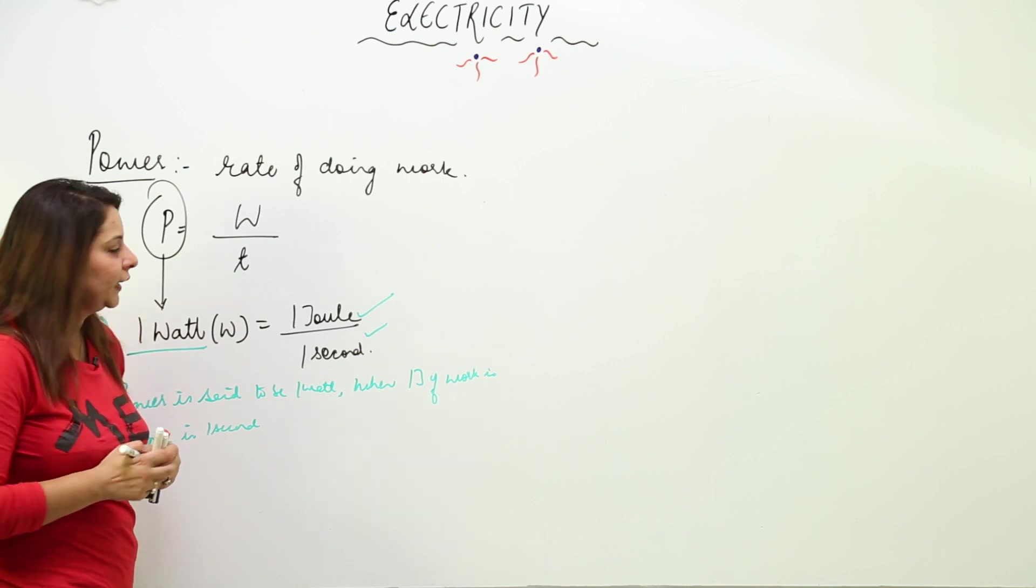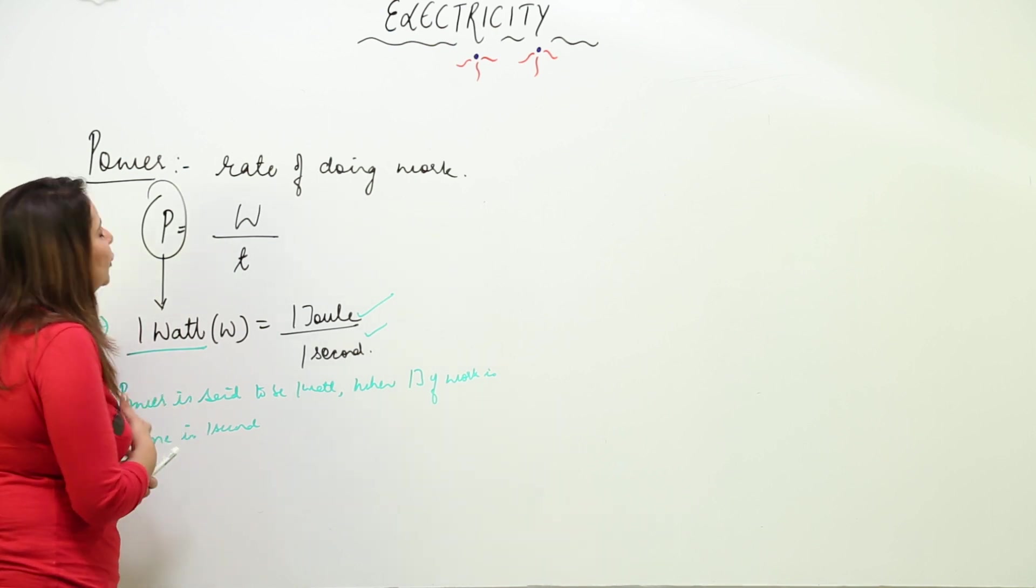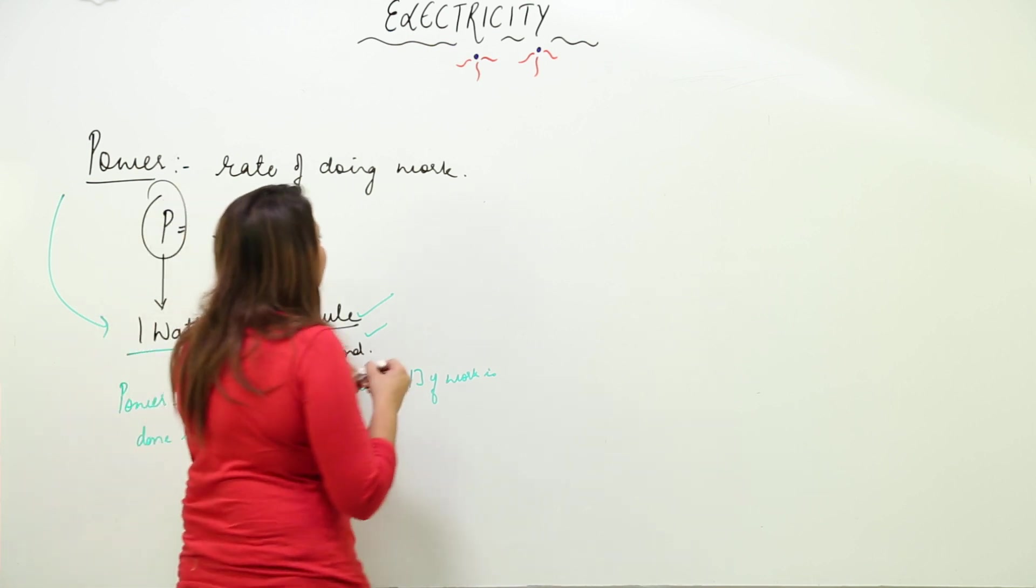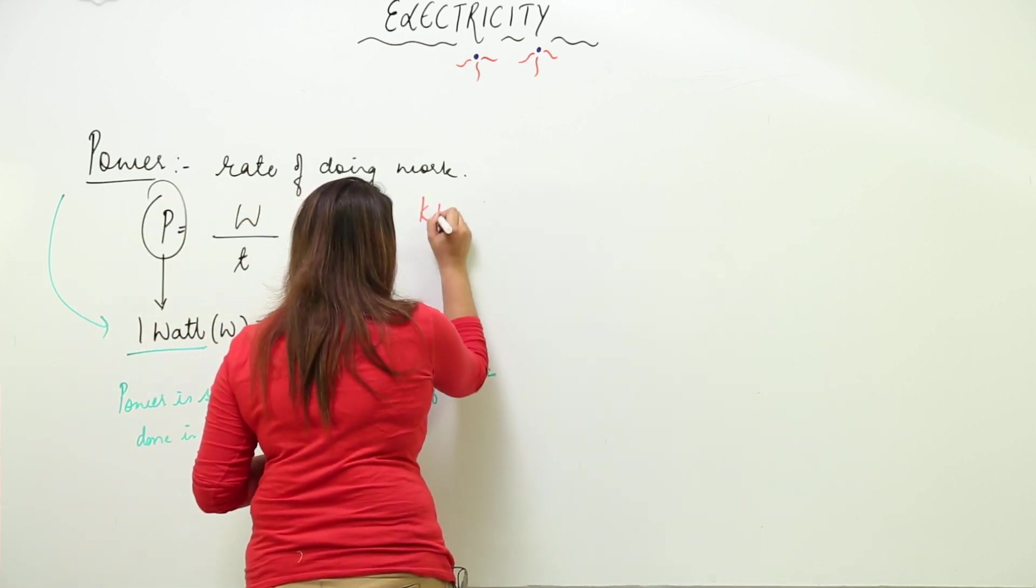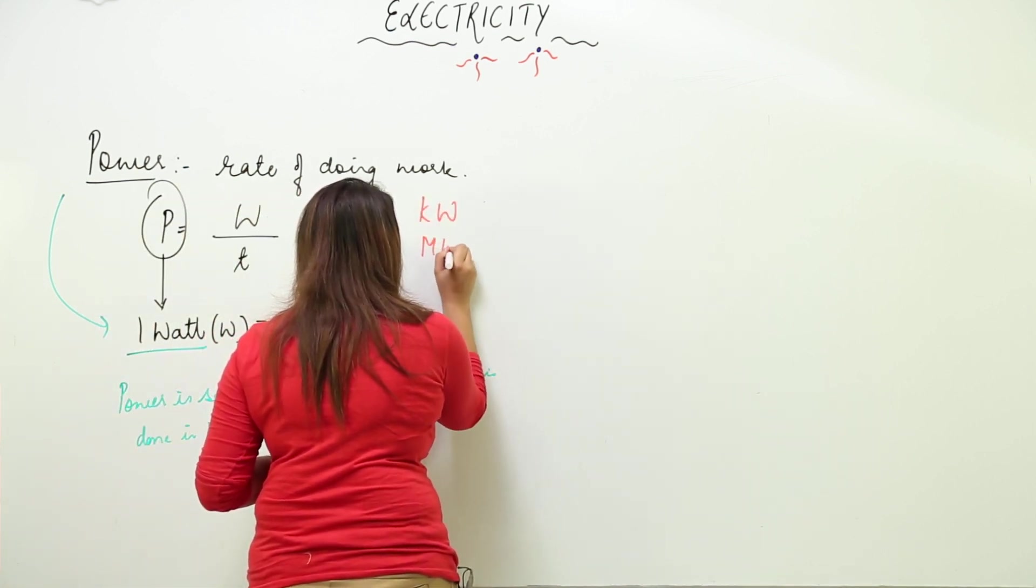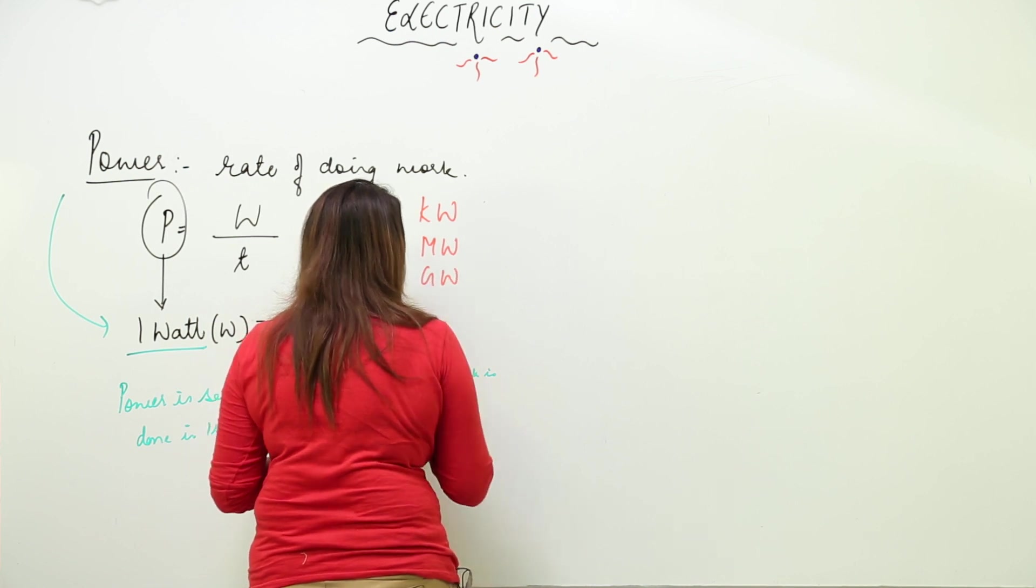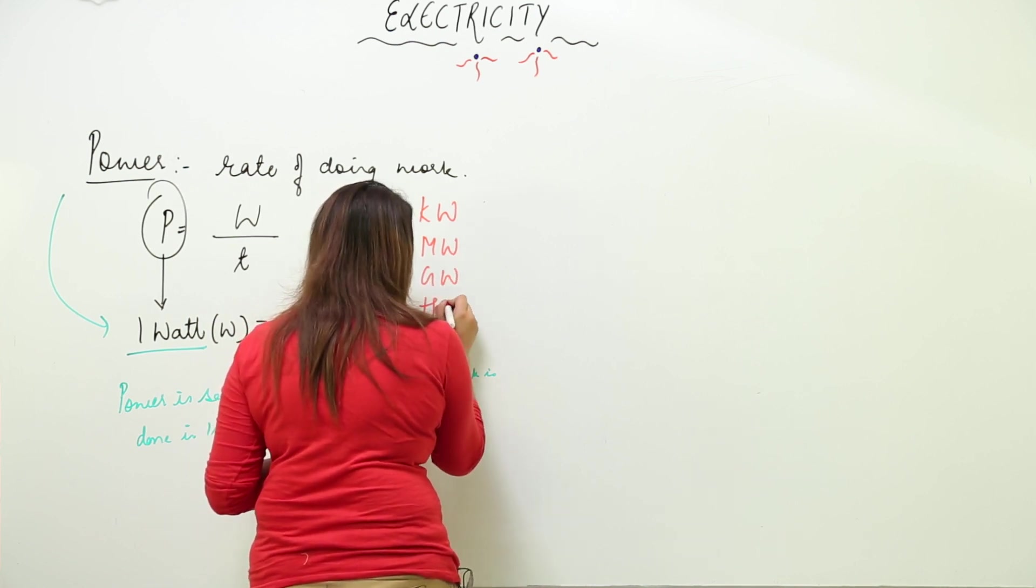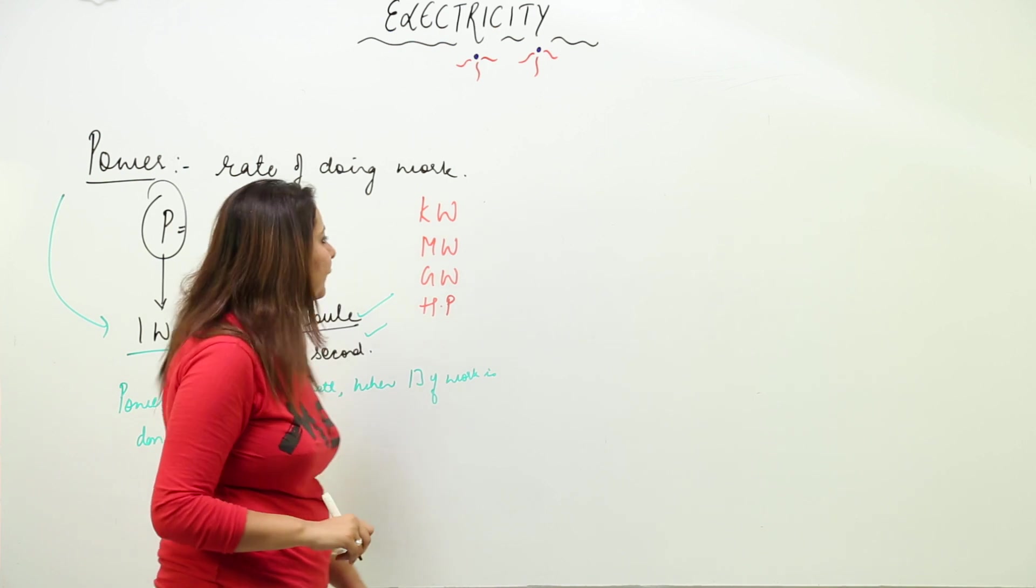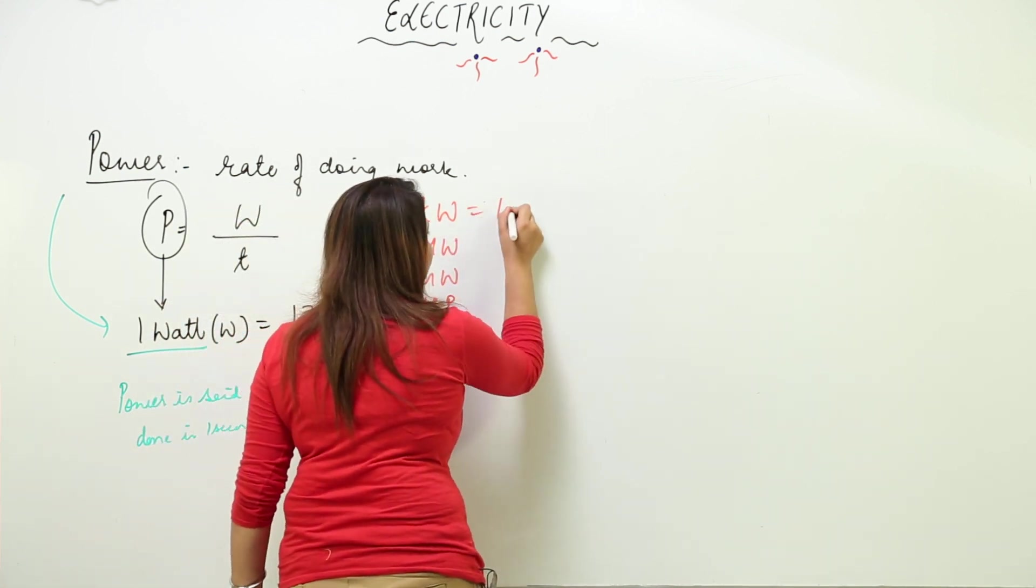The SI unit of power is watt, but we have many more units. The bigger units can be kilowatt, megawatt, or gigawatt. 1 kilowatt equals 10³ watts (1000 watts), 1 megawatt equals 10⁶ watts.